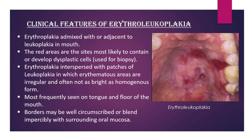Clinical features of erythroleukoplakia: erythroplakia is admixed with or adjacent to leukoplakia in the mouth. The red areas are the sites most likely to contain or to develop dysplastic cells and are used for biopsy. Erythroplakia interspersed with patches of leukoplakia shows erythematous areas that are irregular and often not as bright as the homogeneous form. These are most frequently seen on the tongue and floor of the mouth, with borders that may be well circumscribed or blend indistinguishably with the surrounding oral mucosa.